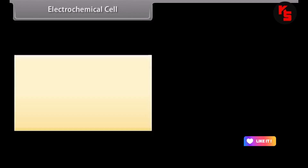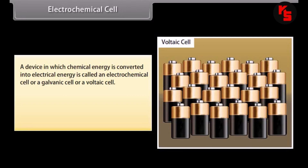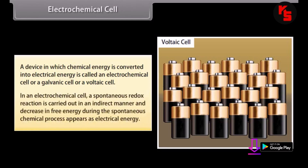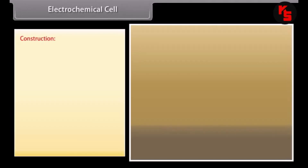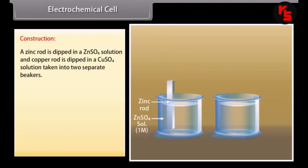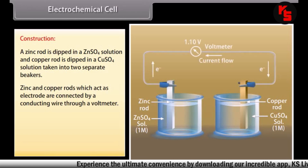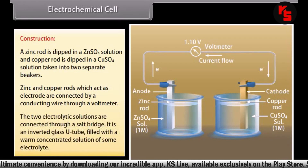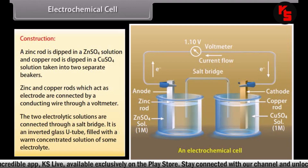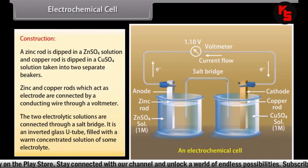Electrochemical cell. A device in which chemical energy is converted into electrical energy is called an electrochemical cell, or a galvanic cell, or a voltaic cell. In an electrochemical cell, a spontaneous redox reaction is carried out in an indirect manner, and the decrease in free energy during the spontaneous chemical process appears as electrical energy. Construction: a zinc rod is dipped in a ZnSO₄ solution and a copper rod is dipped in a CuSO₄ solution, taken into two separate beakers. The zinc and copper rods, which act as electrodes, are connected by a conducting wire through a voltmeter. The two electrolyte solutions are connected through a salt bridge — an inverted glass U-tube filled with a warm concentrated solution of some electrolyte.